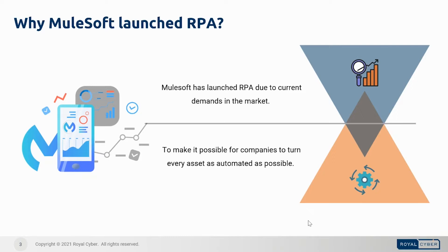MuleSoft RPA is going to make it easy for line of business and knowledge workers to automate business processes and increase efficiency and speed. The new robotic process automation capabilities, from the recent ServiceTrace acquisition, replace repetitive tasks with bots that can intelligently process documents, enter data, or take action on the user's behalf — all without code.